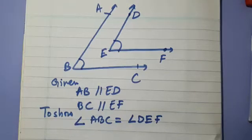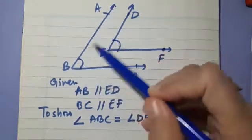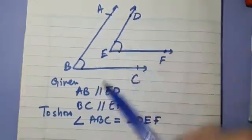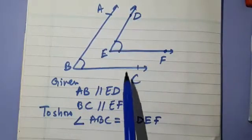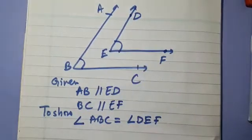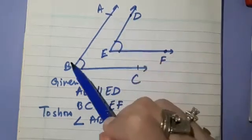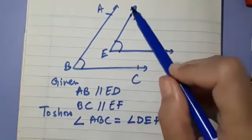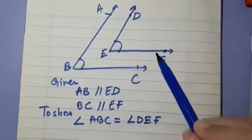Hello dear students, let us discuss this interesting question from the chapter Parallel Lines. In this figure, it is given that AB is parallel to DE and BC is parallel to EF. And we have to prove that angle ABC is equal to angle DEF.